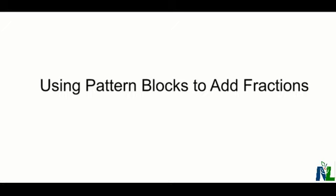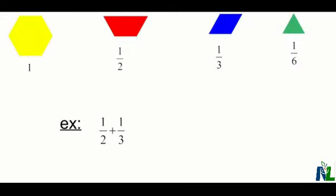Today's lesson, we're going to learn how to add fractions using pattern blocks. You can see here that one yellow hexagon represents one whole, a red trapezoid is a half, a blue rhombus is a third, and as you can see here, three rhombus make up one whole hexagon.